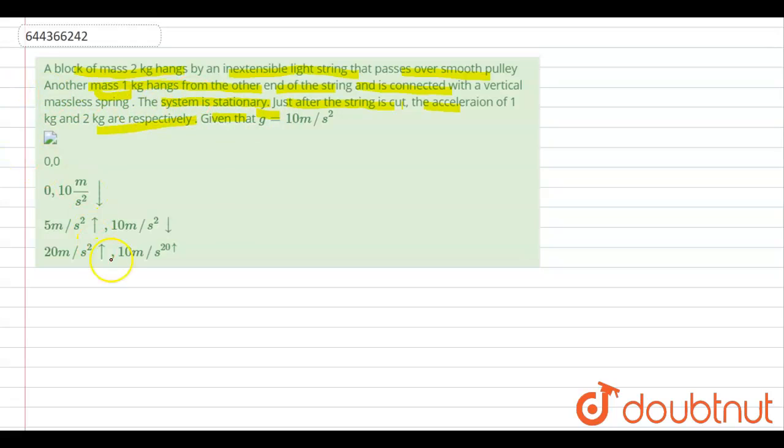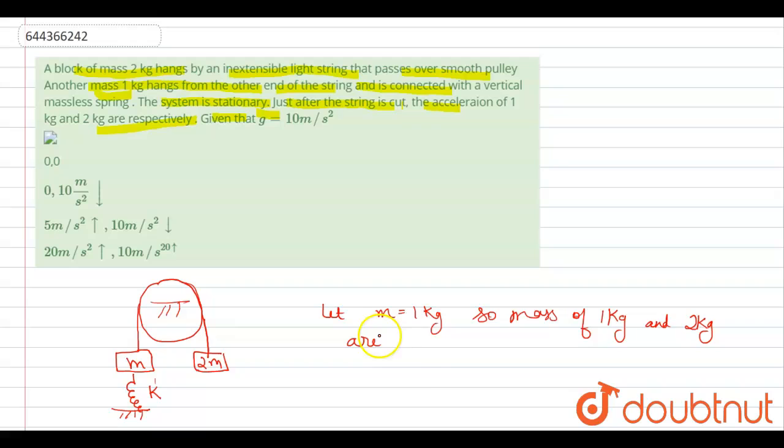To solve this question, first of all make the diagram of this question, which looks like this. Here is a string, this is small m and on this side, this is 2m and small m is connected with a spring. The spring constant is k. So m is equal to 1 kg, so mass of 1 kg and 2 kg are m and 2m respectively.